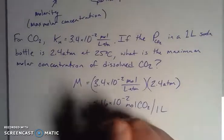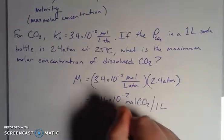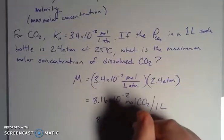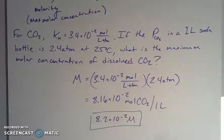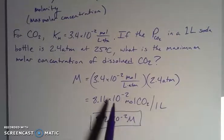Looks like sig fig-wise, we're probably going to have to round this thing. So we'd go 8.2 times 10 to the negative 2. And again, we're talking about molarity, but we are talking about molar concentration as well.